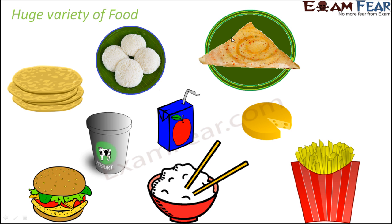Juices are obtained from fruits and vegetables. Items like chicken are obtained from animals. So when you look at the variety of food, you see that all of them are obtained from different sources — some of them are obtained from plants, and some of them are obtained from animals.